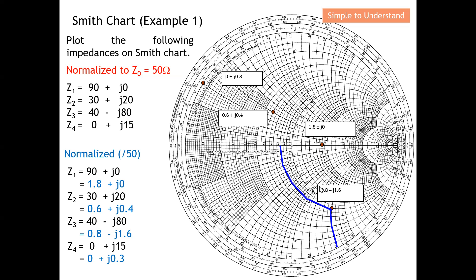Last, let's plot 0 + j0.3. If the resistivity is 0, I know it will be on the extreme left-hand side — that's the short circuit point. I need to find 0.3 on the reactance arc: 0.1, 0.2, 0.3 — and here is the point 0 + j0.3. This completes a simple example of how to plot all four points onto the Smith chart. First normalize, then draw.